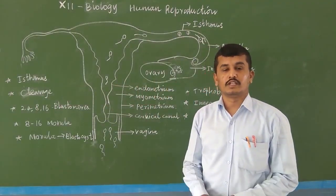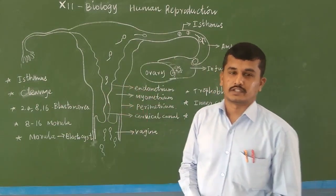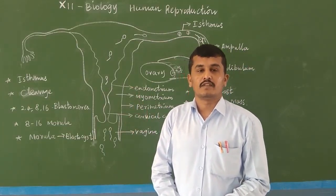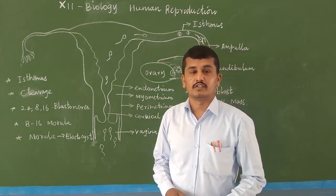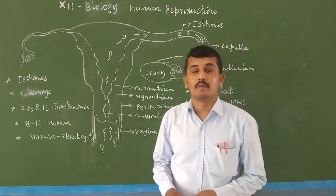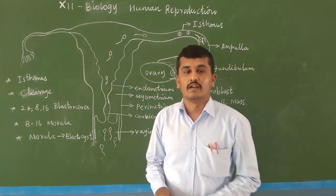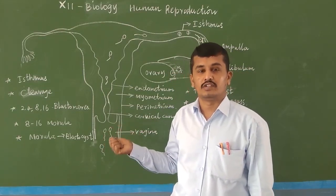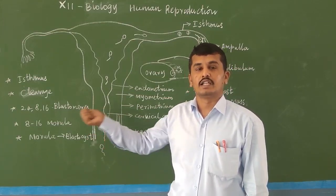Good morning students. Today we will learn Human Reproduction, Chapter 3, Grade 12. In previous classes we discussed parts of the male reproductive system, parts of the female reproductive system, gametogenesis, and fertilization. Today we will learn how fertilization occurs and how fertilized zygotes develop into an embryo and other related topics.